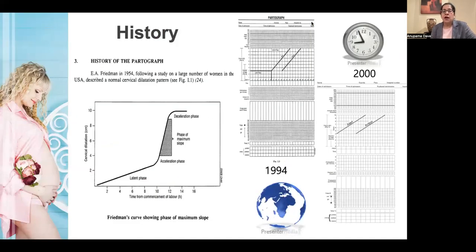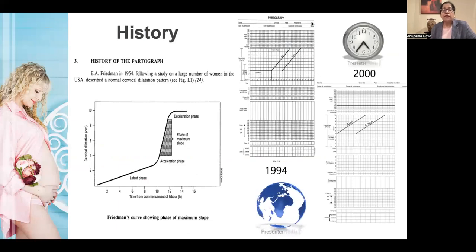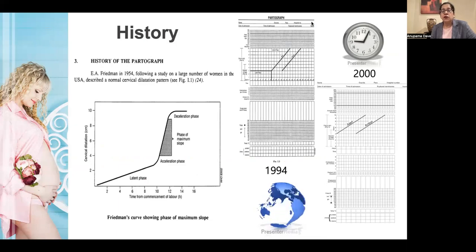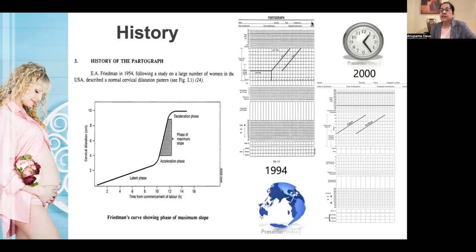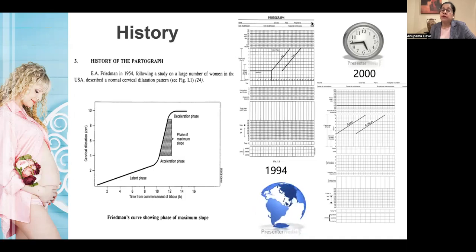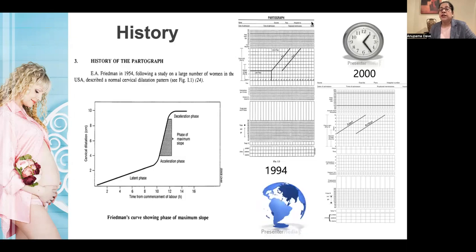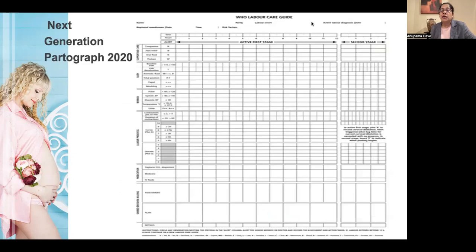Looking back in history, since 1954 we have had a partograph in which cervical dilatation was plotted against time. The initial partograph was given by Friedman. Then in 1994, we had the WHO partograph with a latent phase and an active phase. In 2000, the WHO partograph was modified — we abolished the latent phase, and alert and action lines were strictly adhered to.